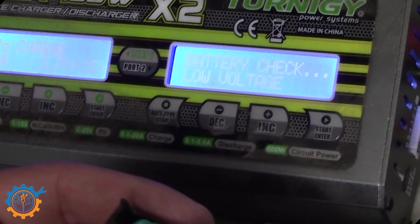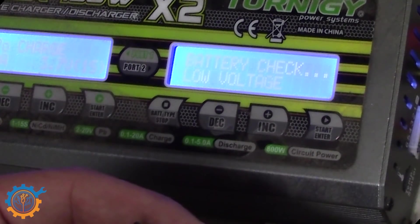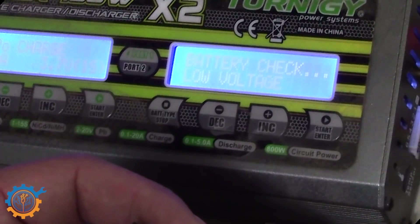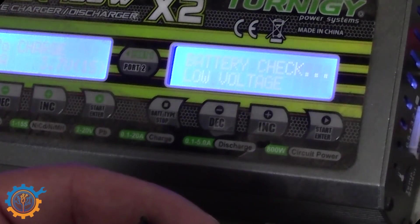You will see that that charger actually is alarming about low voltage. And that's because this LiPo is way below 2.5 volt that this is set for minimum. And you cannot charge it.